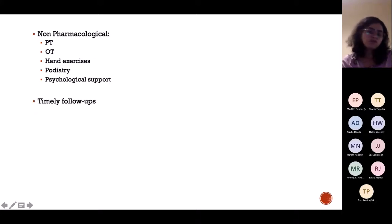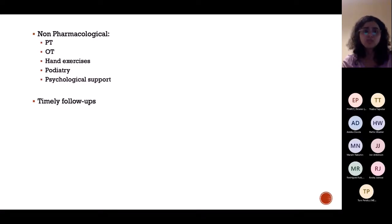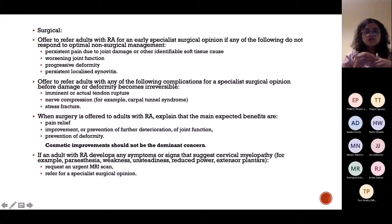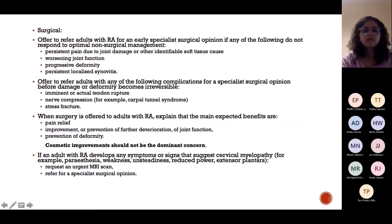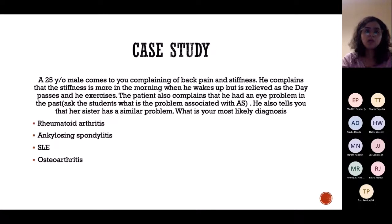Non-pharmacological treatment includes physiotherapy, occupational therapy, hand exercises, podiatry, and psychological support — as chronic conditions cause patients significant emotional distress. Timely follow-ups are important. Surgery such as silicone knuckle implantation can be done in severe cases where patients cannot bend their hands at all, performed collaboratively by rheumatology and surgery.